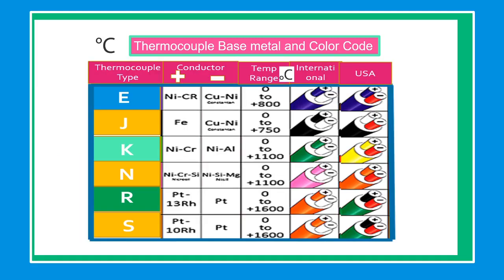The thermocouple base metals are type E, N, J, K, etc. These are the most common categories. The material from which these thermocouples are made are inexpensive and commonly available metals such as iron, copper, nickel, etc.